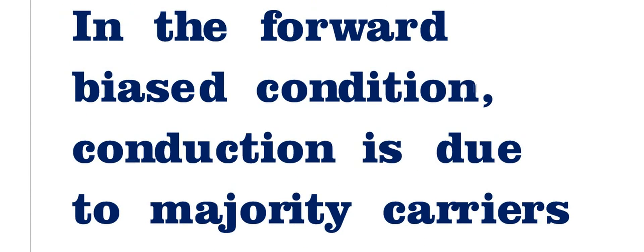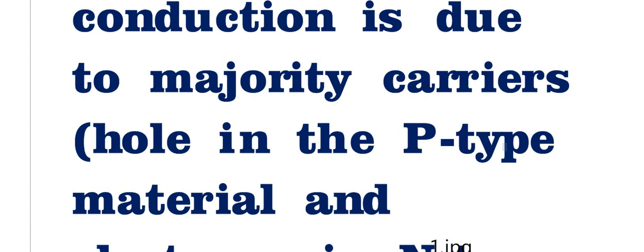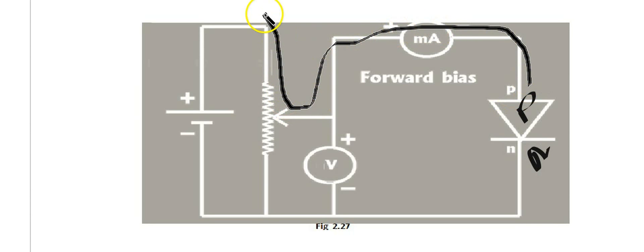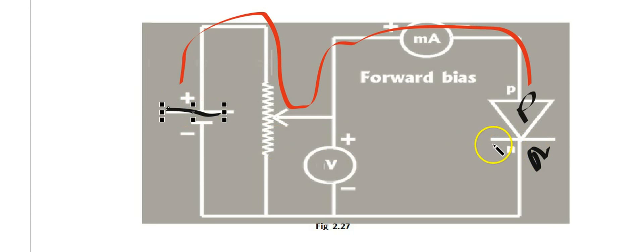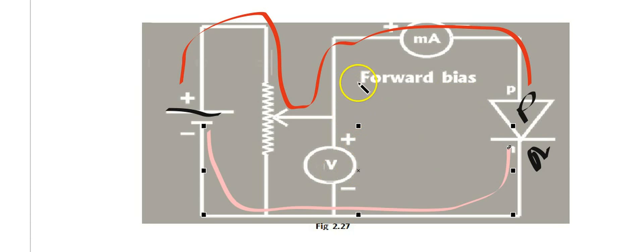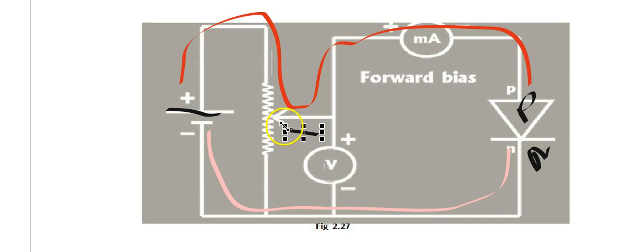In the forward bias condition, conduction is due to the majority carriers — holes in the P-type and electrons in the N-type — which start accelerating. Here is a simple diagram showing how we can vary the forward bias. This is the P-N junction diode; P is made positive with the positive terminal and N is made negative with the negative terminal of the battery. The forward bias voltage is variable through a variable resistance arrangement — by sliding the arrow on the resistance, we can give any forward bias to the P-N junction.